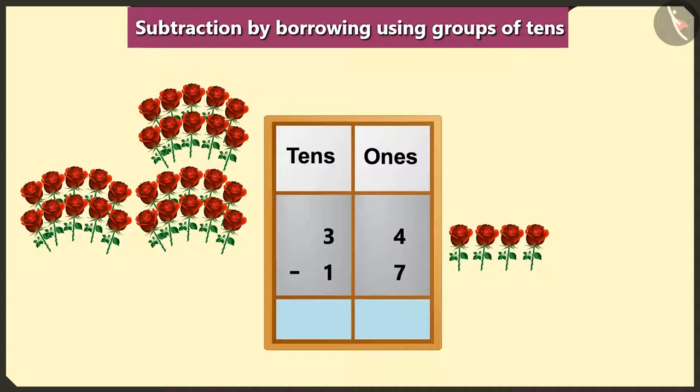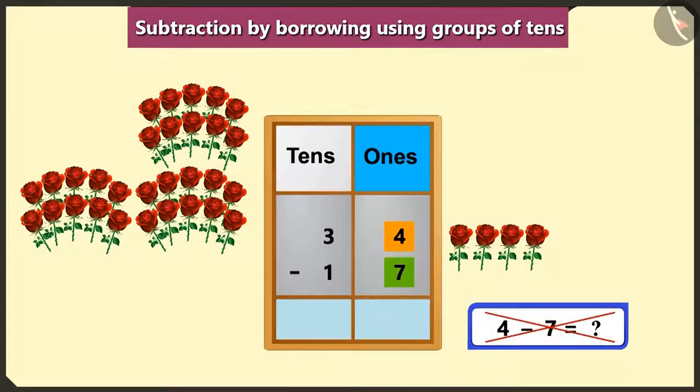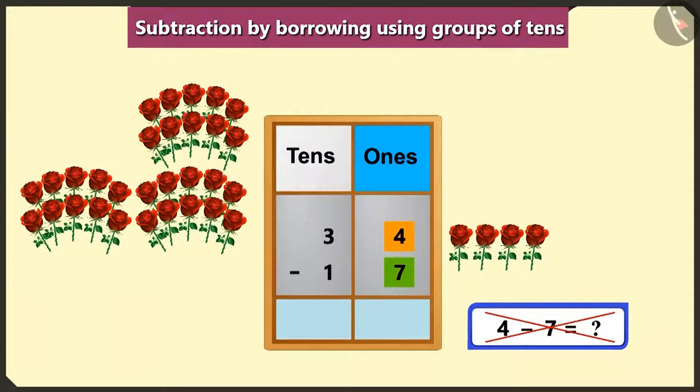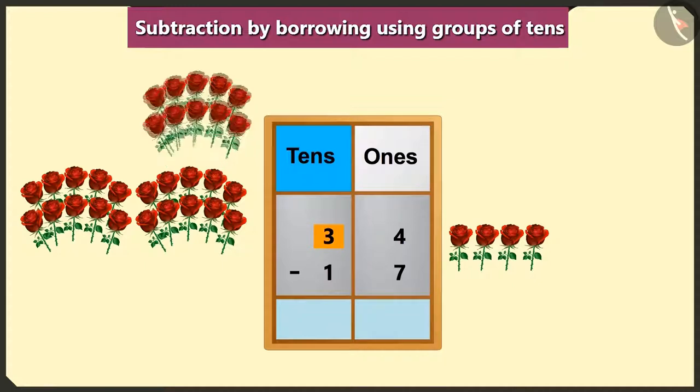Hmm, but here we cannot subtract 7 from 4 in the box of ones. So, we will borrow one ten from the three tens in the box of tens.